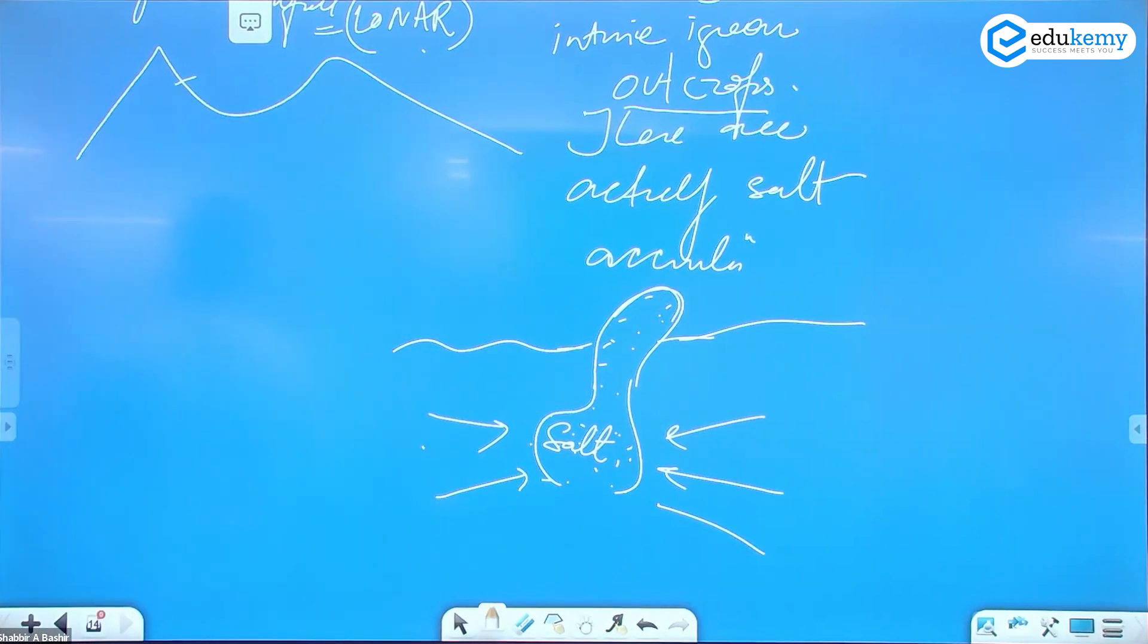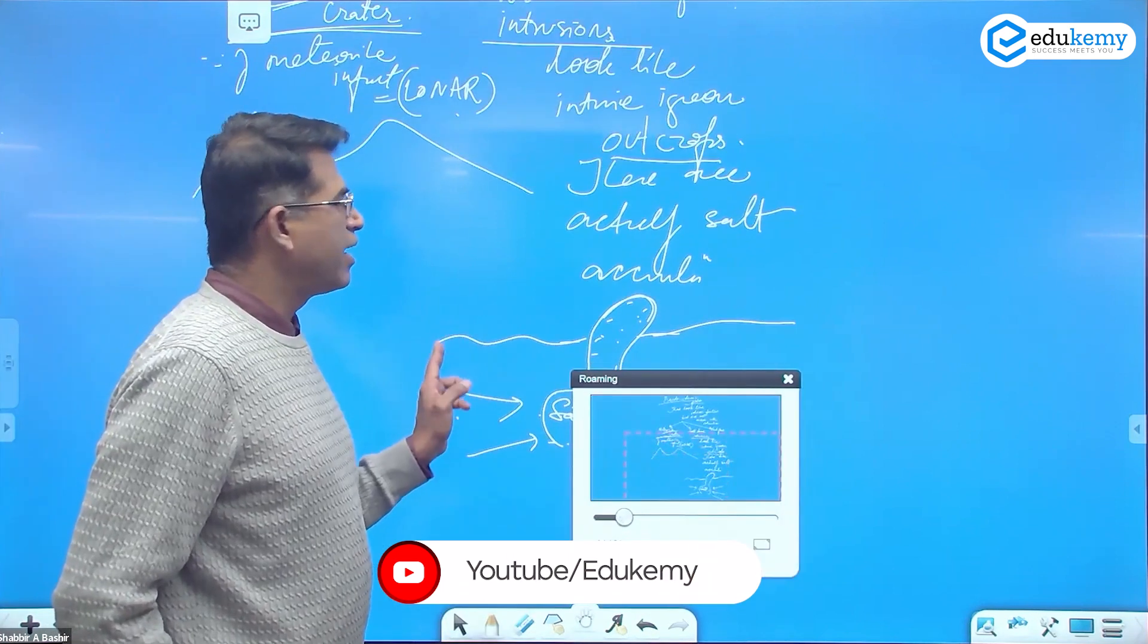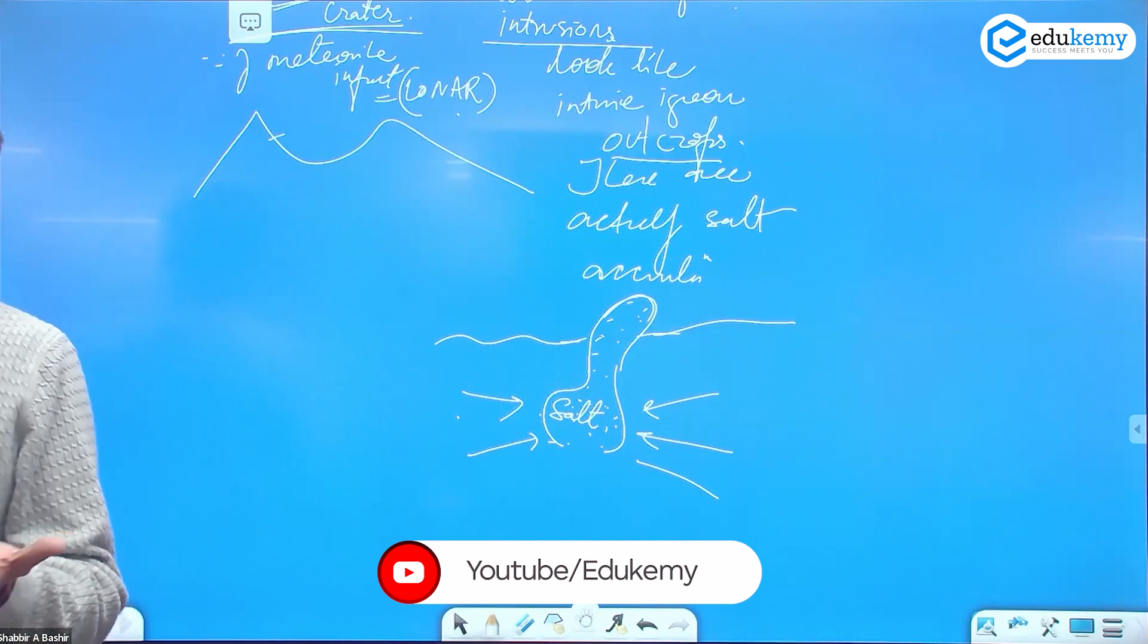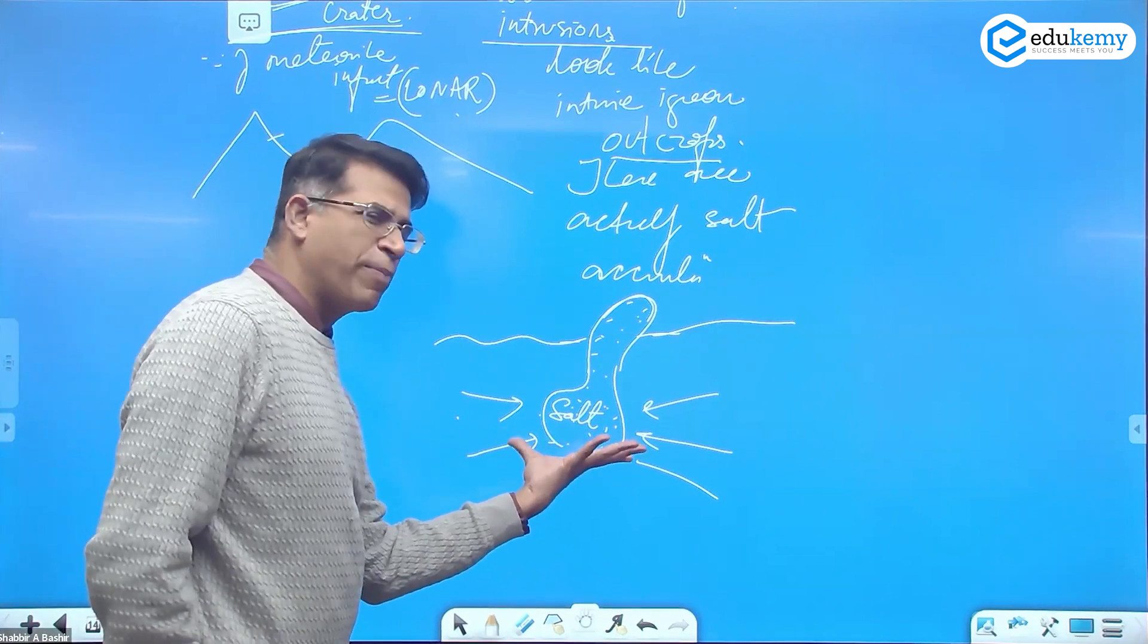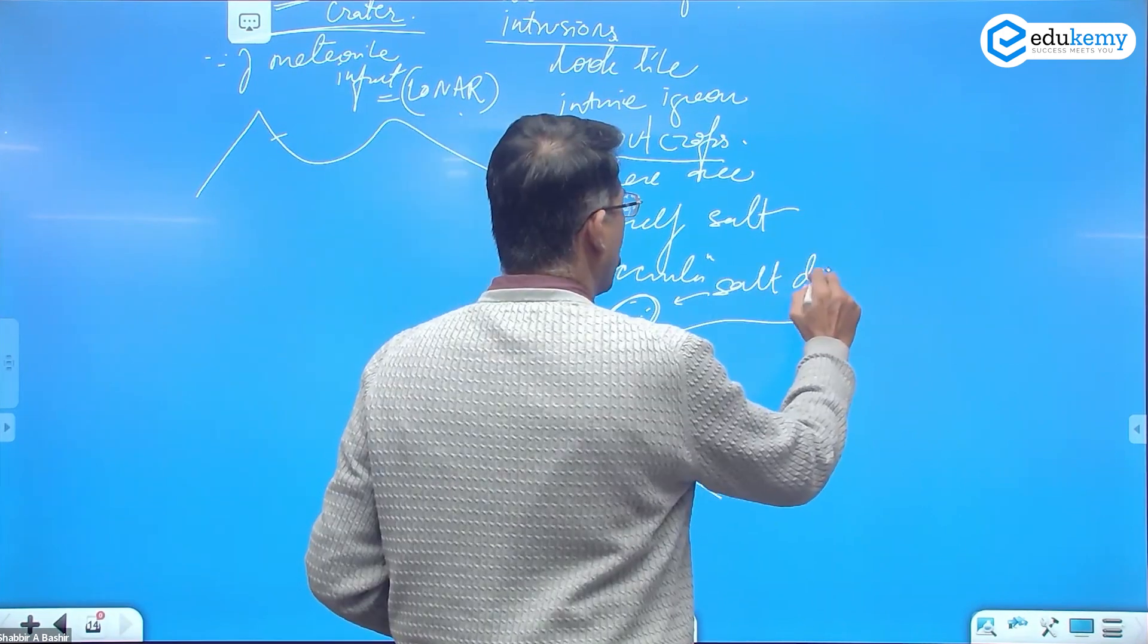But actually what is this? This is salt. They form salt domes, they can form salty hills. There are actually salt accumulations because of, as I said, hydrostatic pressure. What's the mechanism I do not know.